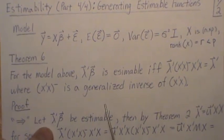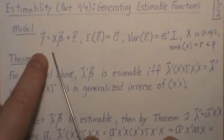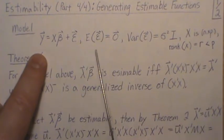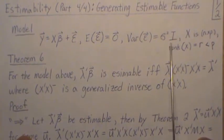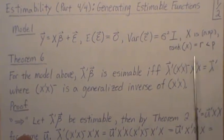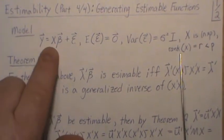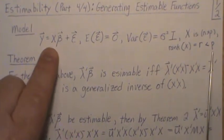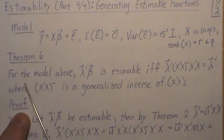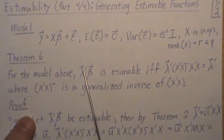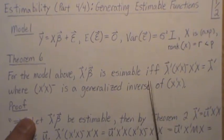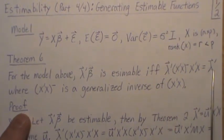So theorem one first. Well, the model first. So it's y equals x beta plus error, mean is zero, constant of variance is sigma squared, covariance is zero. x is NP and x is rank R, which is less than P. Now for the model above,